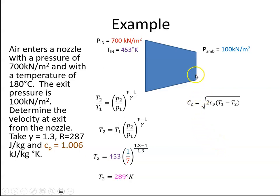So the velocity of gas at the exit, shown here, is the square root of 2 times Cp times (T₁ - T₂). So that's 2 times 1006 joules, times (453 - 289), and that works out to be 574 m/s.